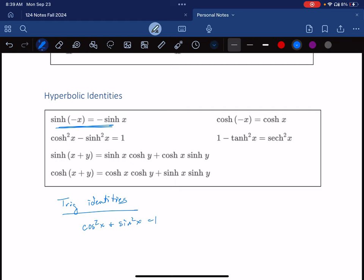They are just identities. So you have something like this sinh of negative x is equal to negative sinh of x, right? And that's just an identity that this function, hyperbolic sine, is an odd function,